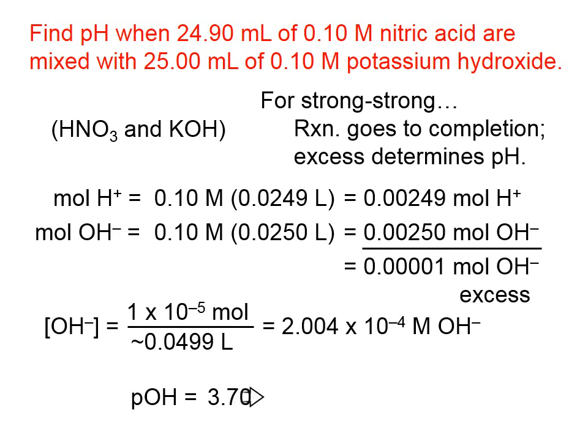We simply take the negative logarithm, and since the sum of the pH and the pOH is 14 at 25 degrees Celsius, we can calculate the pH. That's how you deal with a strong, strong reaction.